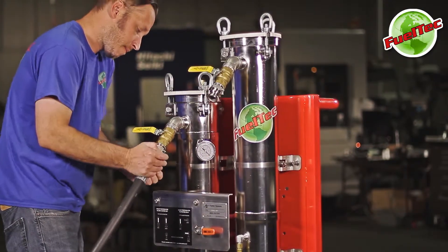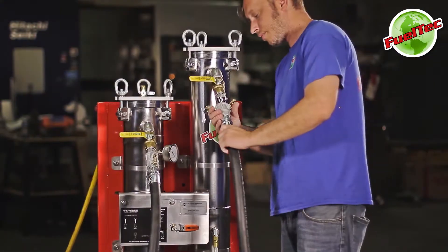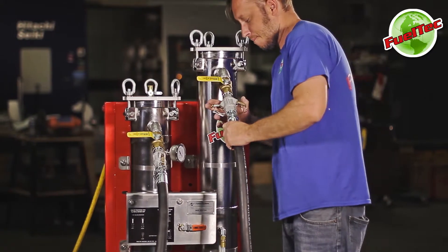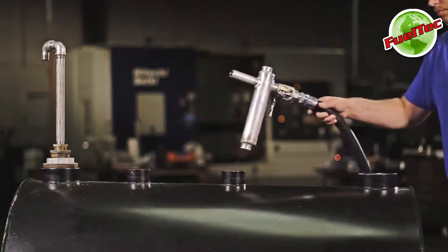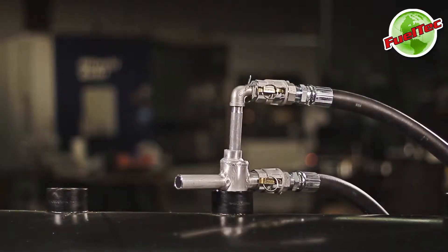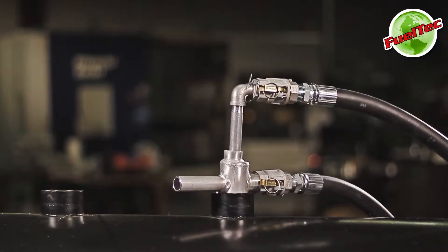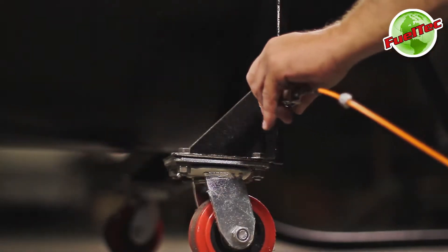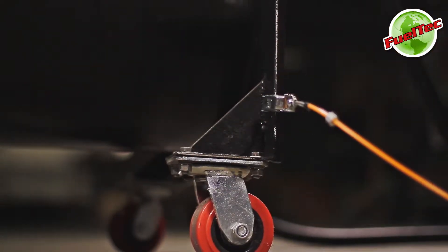Connect the suction hose to the primary filter inlet. Connect the return to tank hose to the water separator outlet. Insert the return to tank manifold into the tank opening. Insert the fluid pickup tube through the manifold into the tank. Connect the static ground cable to the tank to prevent sparks.